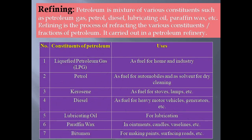Refining of petroleum gives various products. Petroleum is a mixture of various constituents such as petroleum gas, petrol, diesel, lubricating oil, paraffin wax, and others. LPG is used as a fuel for home and industry. Petrol is used as a fuel for automobiles and as a solvent for dry cleaning. Kerosene is used as a fuel for stoves and lamps, and in very purified form it is also used as an aviation fuel.